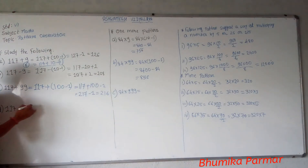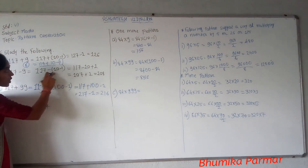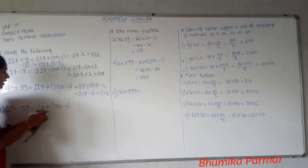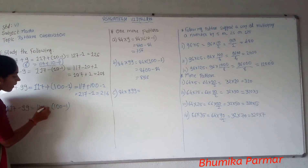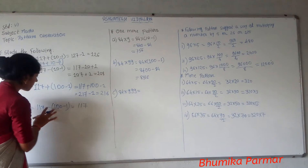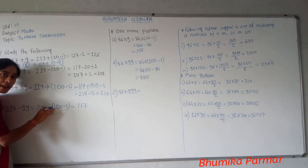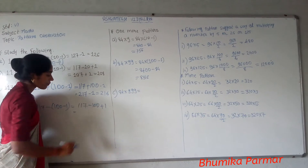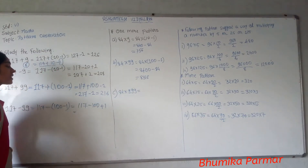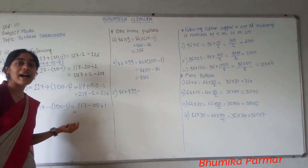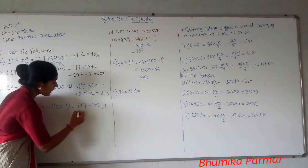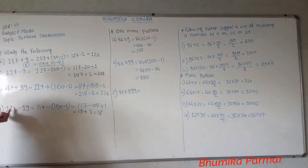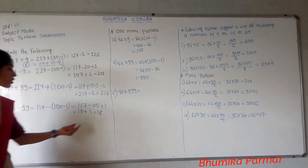For 99, what do we do? Here we had 10 minus 1, now we use 100 minus 1. So for subtraction, we do minus 100 then plus 1. For example, 117 minus 99: we do 117 minus 100 plus 1, which gives only 17 plus 1, so the answer is 18. So if you do 170 minus 99, we give you the answer directly. These patterns of 10 and 100 allow us to simply add and subtract.